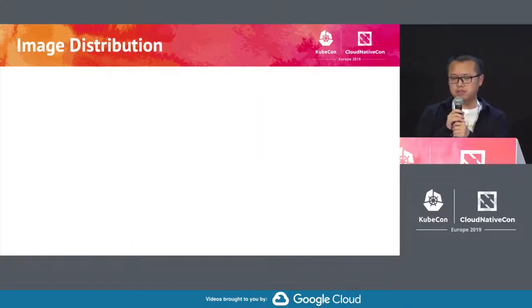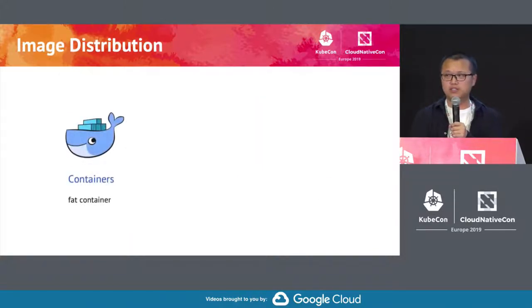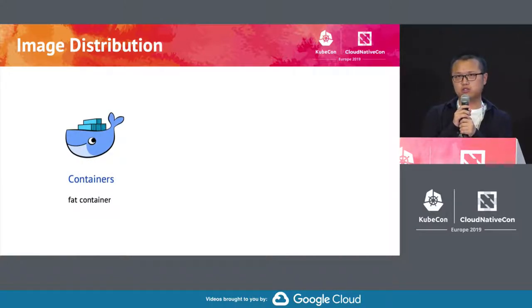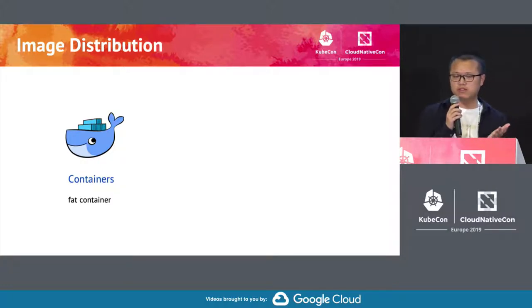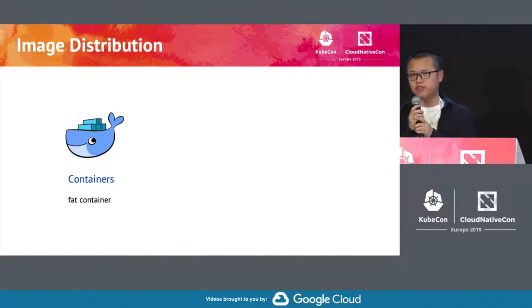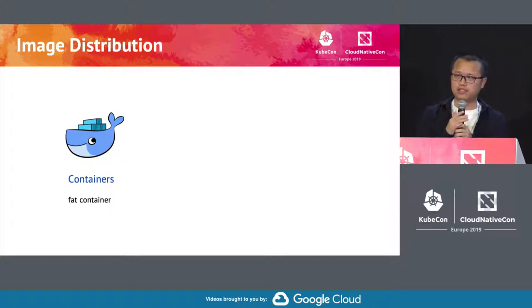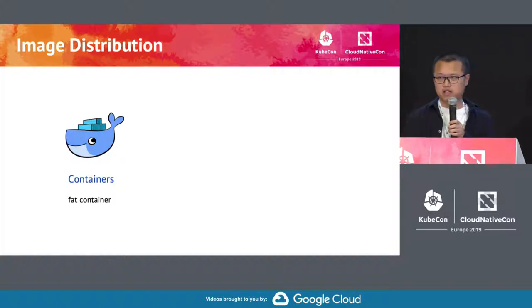And image distribution can be another problem as well. Today, we are all talking about cloud-native. But that's not always possible, or at least not fast enough for you to move from your legacy application to cloud-native application. So you may have to do a migration where you package all of your software and running services into a fat container. That basically means you are running a container as a VM. And in that case, the image can be very, very large.